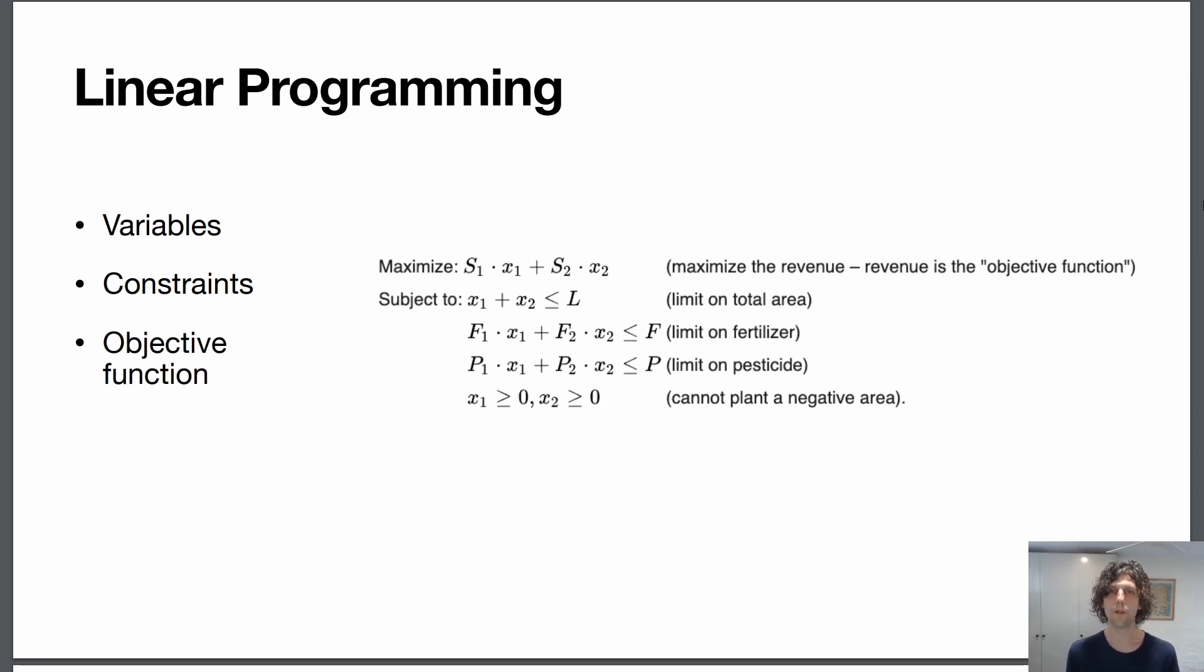So you've got f1 and f2 are constants here to represent how much fertilizer each variable takes. Similarly you can put a limit on pesticide and then you can't plant a negative area so both variables need to be greater than zero.